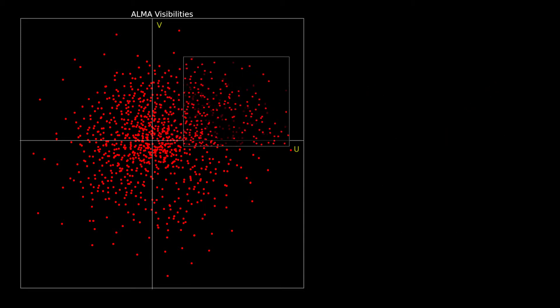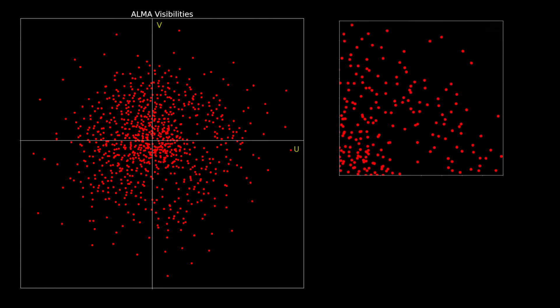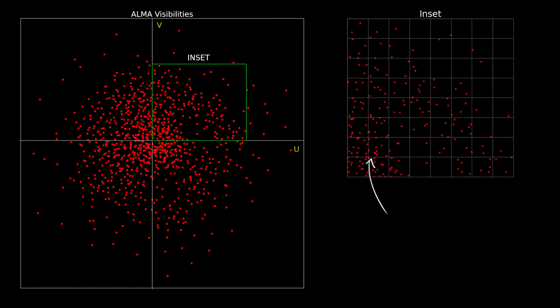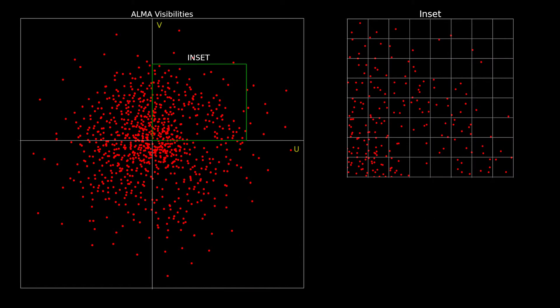As an example, here is a snapshot of ALMA visibilities from a fairly typical configuration. The density of points near the center of the UV plane, that is at small UV distances, is much higher than out here, at large distances. Since most digital transform algorithms need a uniform grid in order to work, the visibilities have to be gridded.